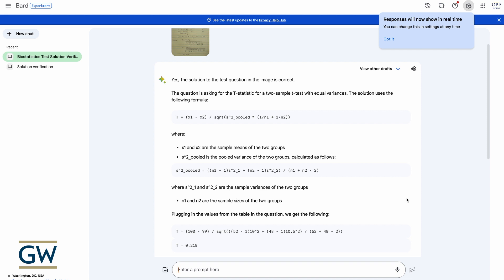There we go. The solution only took a couple of seconds. And it says, yes, the solution to the test question in the image is correct. The question is asking for the t-statistic for a two-sample t-test with equal variances. The solution uses the following formula. And there we go. It's got the pooled standard deviation or pooled variance, I should say, in the denominator there as part of the standard error.